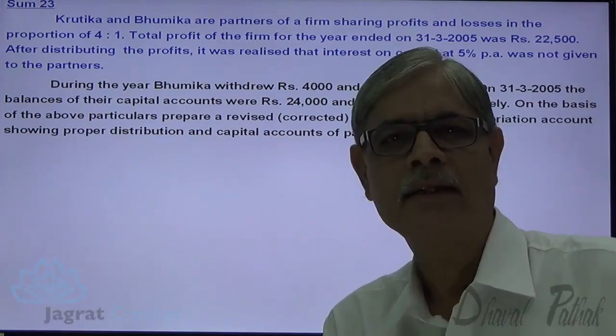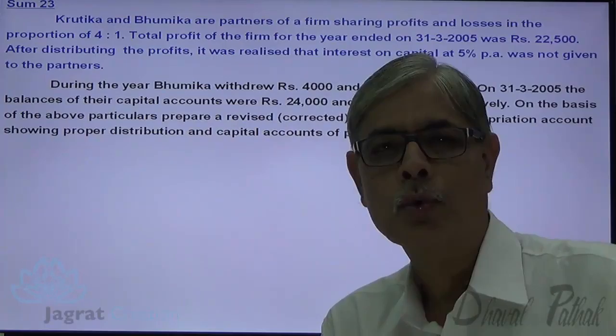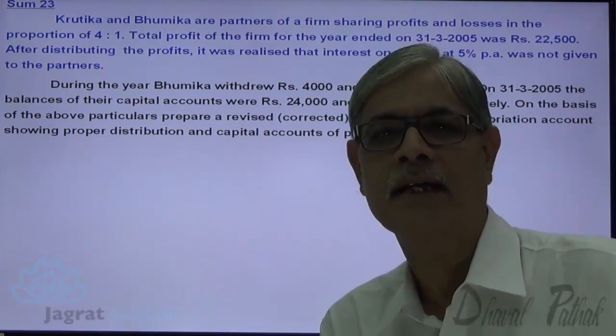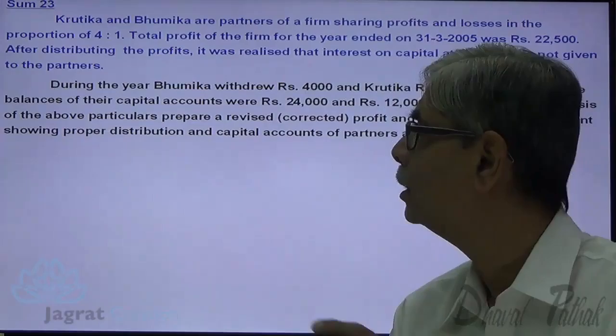To allow interest on capital, credit the partners' capital accounts. Whatever the interest on capital is, that is to be treated as a loss and distributed among the same partners in the profit sharing ratio. This is how a rectification entry could be made. But in this sum, we are not asked to write the rectification entry; we are required to prepare the profit and loss account and capital accounts once again, as if no error has occurred.